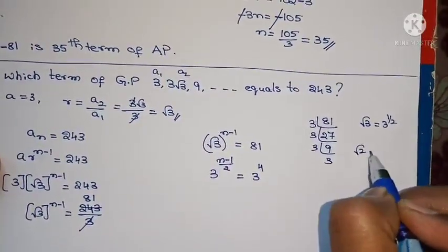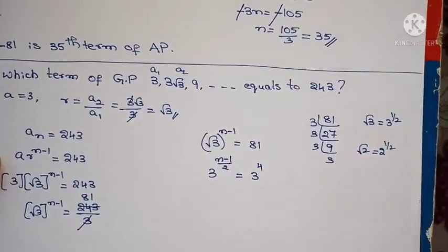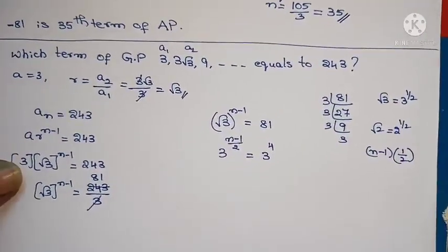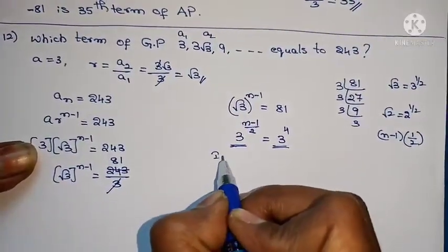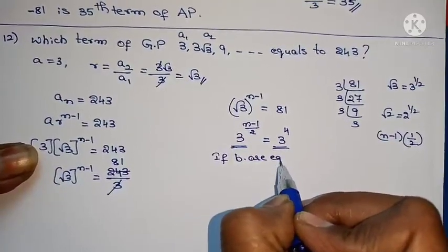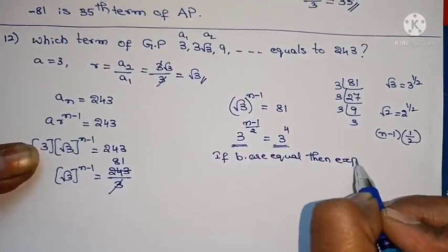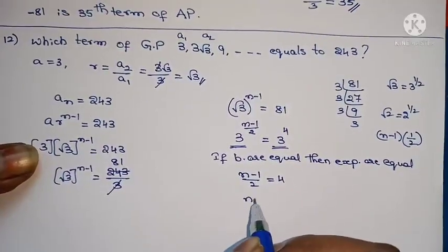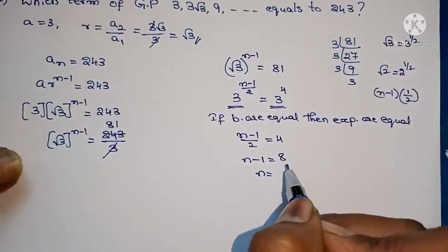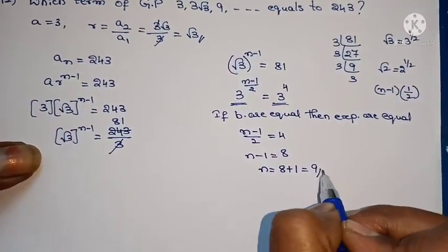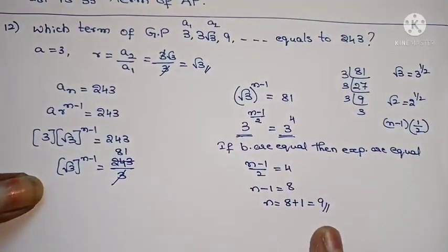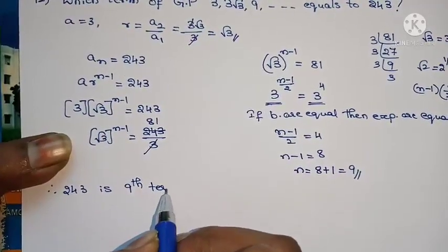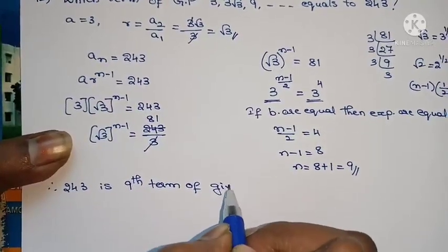If bases are equal, we can equate the exponents. So (n-1)/2 equals 4. Therefore n-1 equals 4 times 2 equals 8. So n equals 8 plus 1 equals 9. Therefore 243 is the 9th term of the given GP.